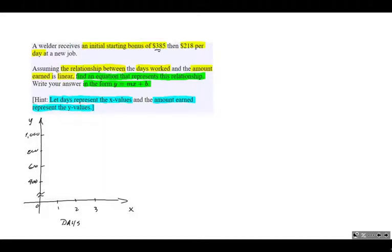And the units on this side are dollars. These are dollars, dollars earned. Let's begin now by plotting some points. This welder receives an initial starting bonus of 385. So day zero, before he or she has stepped on the job, they're receiving a bonus of 385. So before we even start day zero, let's plot this point at 385. And we're going to call that point 0, 385.